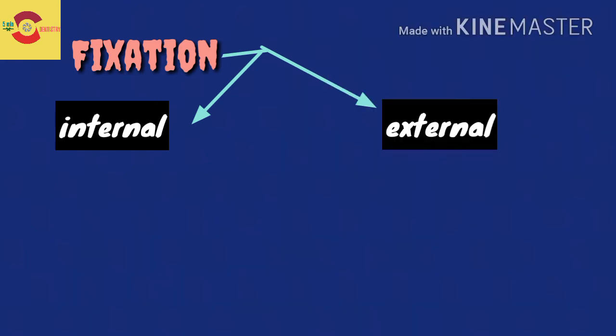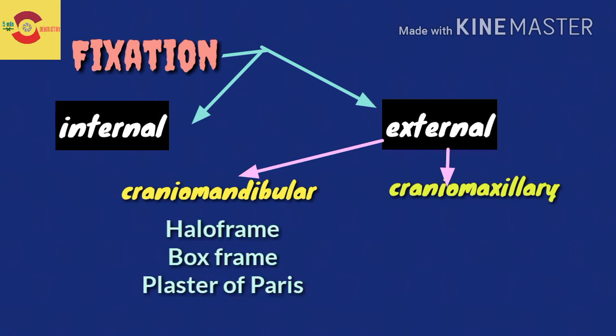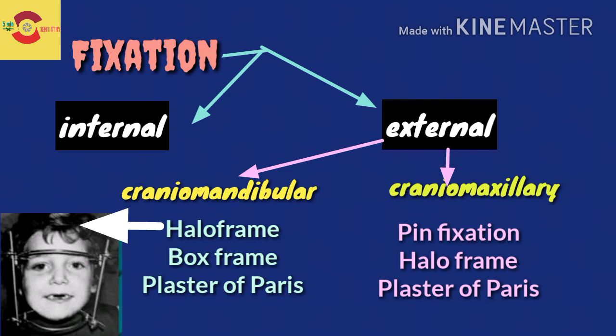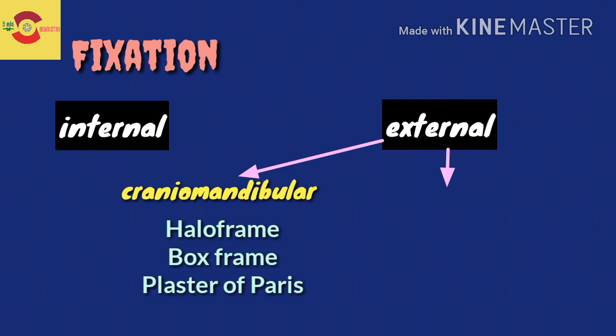Regarding external fixation, we have cranio-mandibular and cranio-maxillary approaches. Cranio-mandibular includes hollow frame, box frame, and plaster of Paris methods. For cranio-maxillary, we have pin fixation, hollow frame, and plaster of Paris methods.